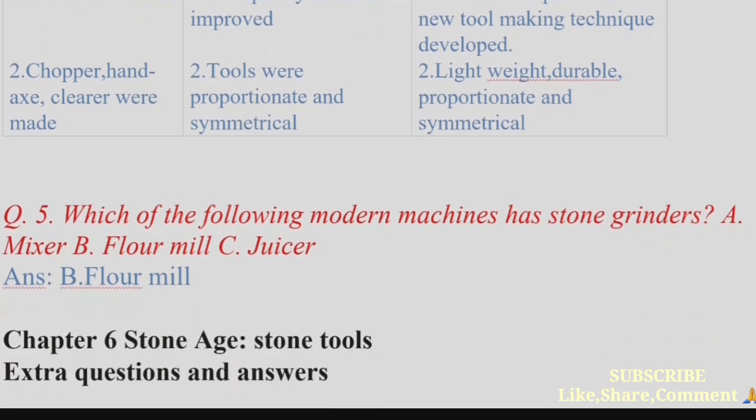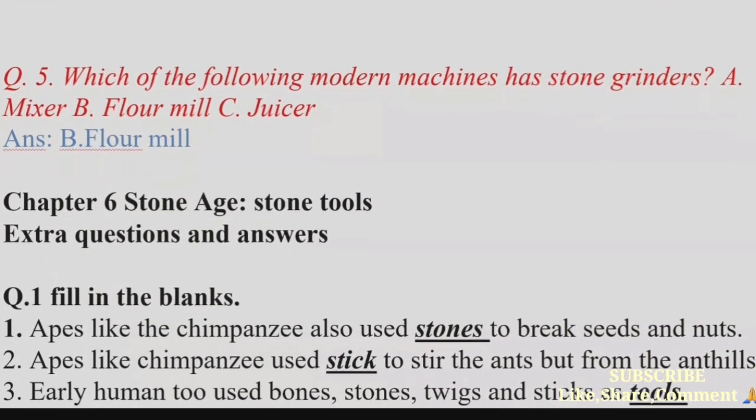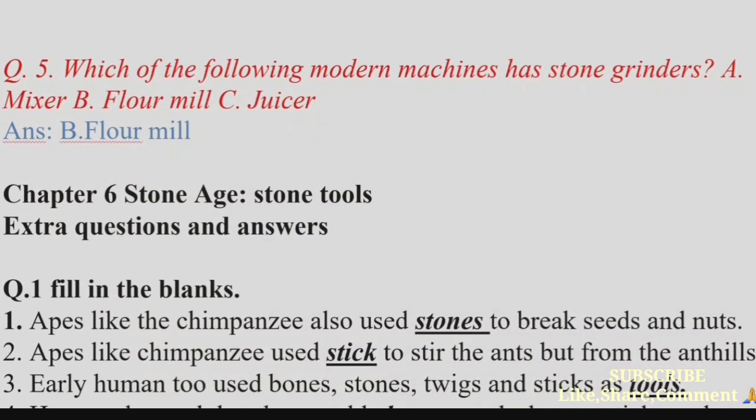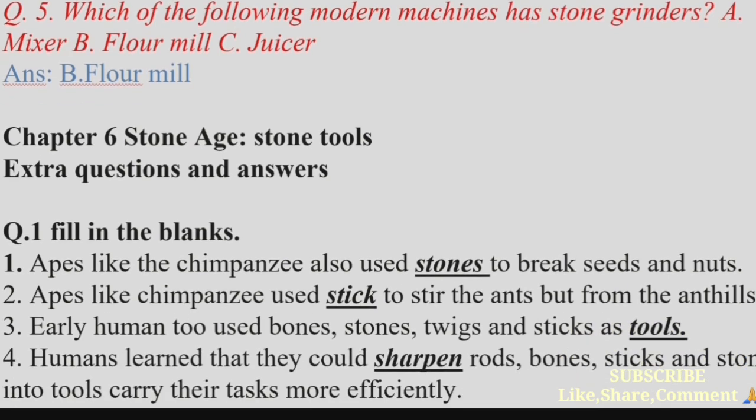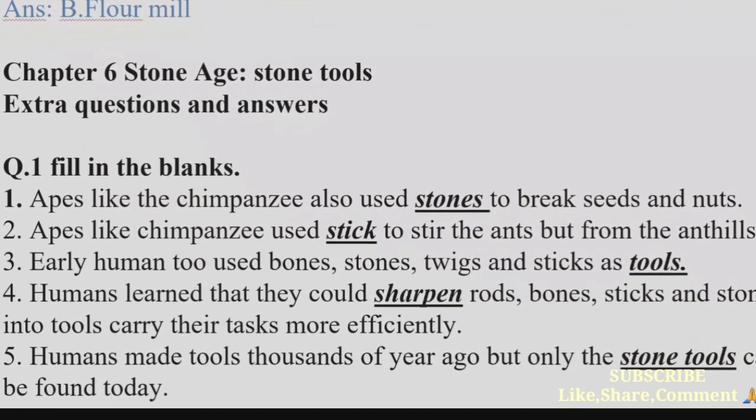Question 5: Which of the following modern machines has stone grinders? Options: (a) Mixer, (b) Flour mill, (c) Juicer. Answer: (b) Flour mill. Now let's look at some extra questions and answers.